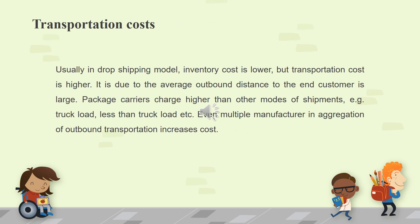Usually in the drop shipping model, inventory cost is lower but transportation cost is higher. This is due to the average outbound distance to the end customer being large. Package carriers charge higher than other modes of shipments, such as truckload or less-than-truckload. Additionally, multiple manufacturers and the aggregation of outbound transportation increases cost.